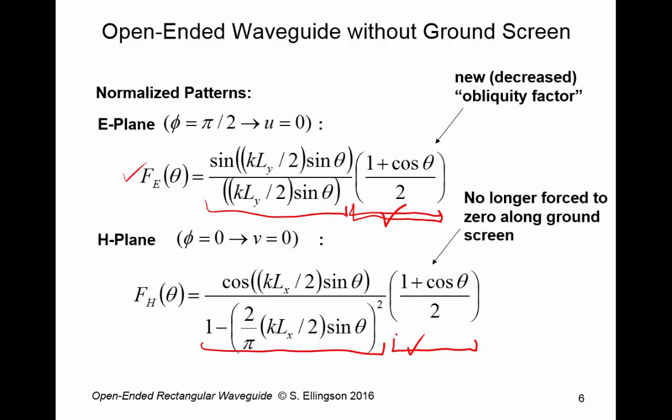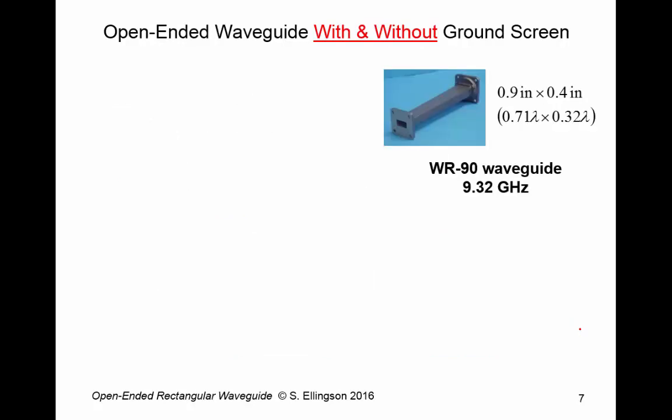The big difference here is that the H-plane pattern is no longer being forced to zero along the ground screen. Why? Because there is no ground screen. So it makes sense that it doesn't necessarily have to go to zero. And in fact, you can see that at theta equals pi over 2, this obliquity factor goes to one-half. So instead of going to zero in that plane of the aperture, it now goes to one-half in the plane of the aperture.